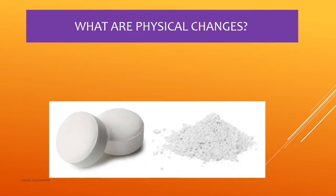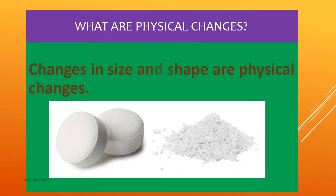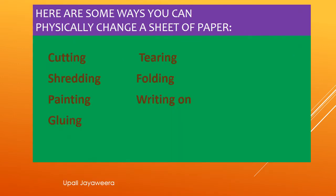What are physical changes? Changes in size and shape are physical changes. Here are some ways you can physically change a sheet of paper: cutting, tearing, shredding, folding, painting, writing on, and gluing.